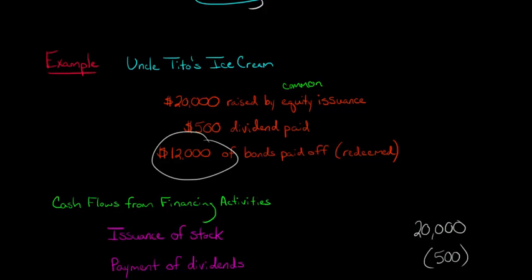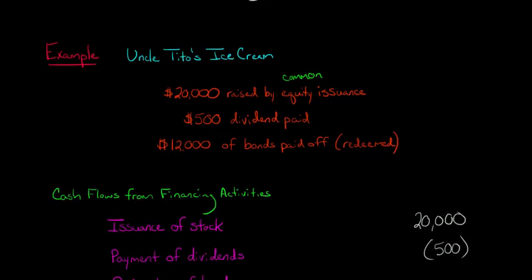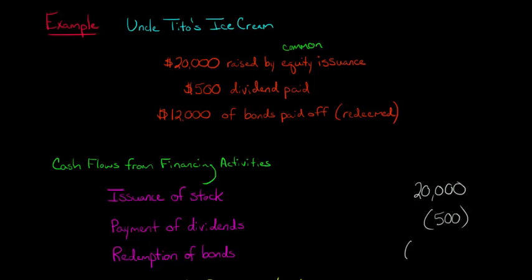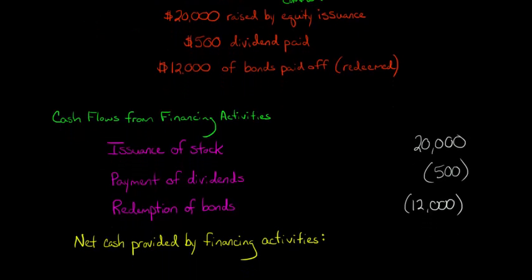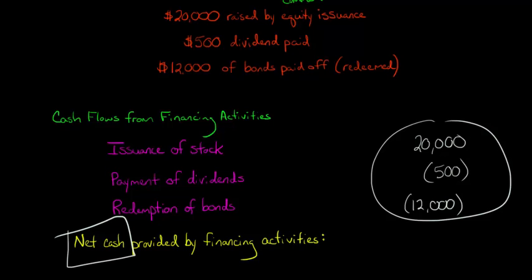Now, the $12,000 of bonds that we pay off makes sense that that's also going to be a cash outflow, right? We're paying off debt. That's going to be a use of cash. So we have a negative $12,000. So now all we do to get the net cash here, we just total these amounts right here. So we've got the negative $12,500 plus $20,000. So this is going to come out to $7,500, and it's a positive number.